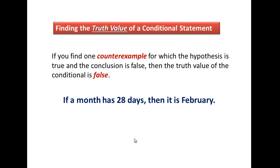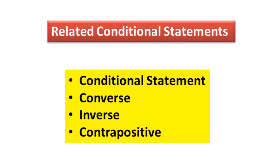Let's look at the conclusion and see if it is indeed true for every time the hypothesis happens. If a month has 28 days, then it is February — can you think of other months that have 28 days? I sure can — 11 others in fact. All we need is one counterexample. I pick December because it's my favorite month. So we have found one counterexample that proves this whole conditional statement is false.